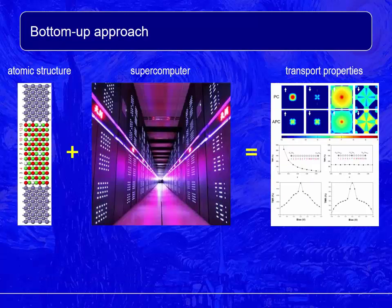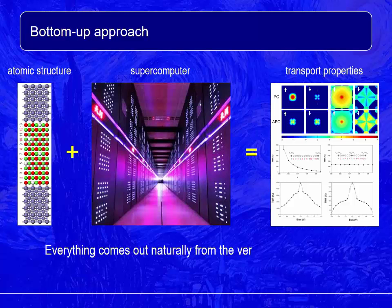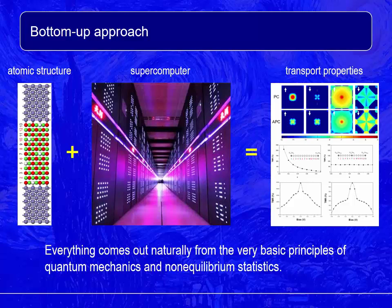An alternative way is called the bottom-up approach. The idea is to build up nano-electronic devices atom by atom on a computer and predict the transport behavior from first principles. By doing so, one is allowed to go inside atomic structures and see what happens from there. The advantage of the approach comes from its unification and generality. We don't have to generate new parameters or create new models for emerging materials or novel designs. Everything comes out naturally from the very basic principles of quantum mechanics and non-equilibrium statistics. The bottom-up approach is complementary to the top-down approach and extremely useful for testing innovative ideas of future technologies.